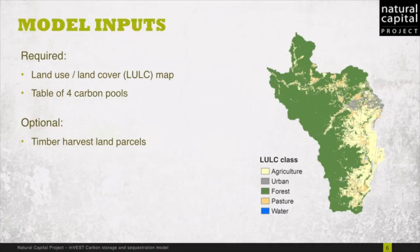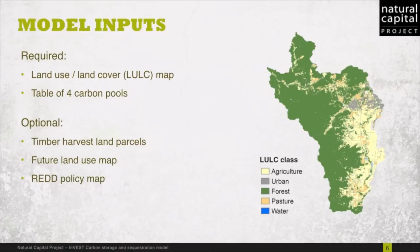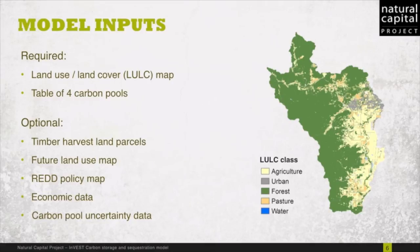In order to calculate sequestration, a future land use map is needed. If you want to consider the landscape for REDD credits, a future REDD policy map is required. To put a monetary value on sequestration, economic data is required, such as carbon price and discount rate. Finally, the model can do an uncertainty analysis if additional carbon pool data is provided.